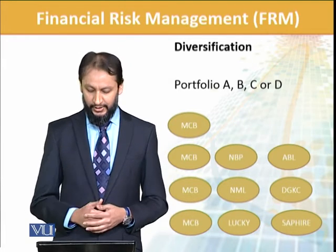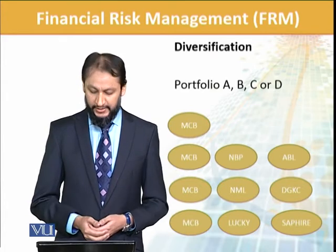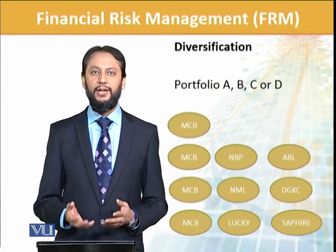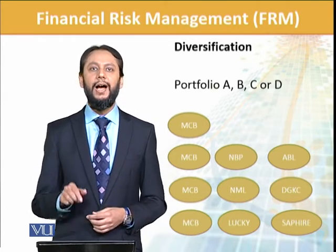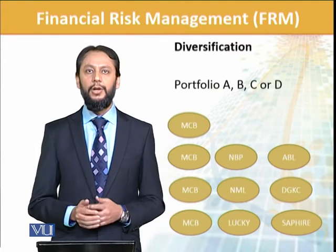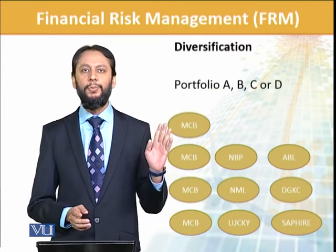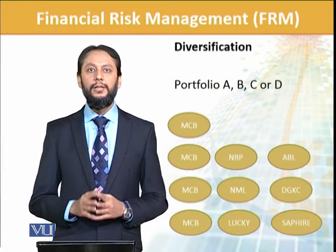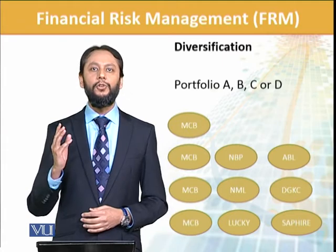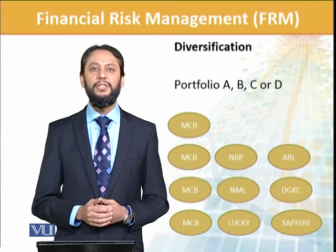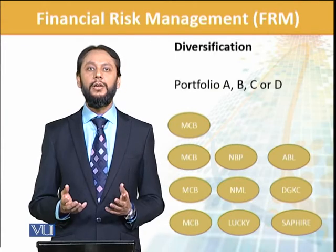Moving down, now we have MCB, Lucky Cement, and Sapphire Textile. Out of all these categories, I'll call this the best portfolio. The reason being: MCB is from the banking sector from one group of companies, Lucky Cement is from an entirely different group of companies, and Sapphire Textile Mill is from an entirely different sector.